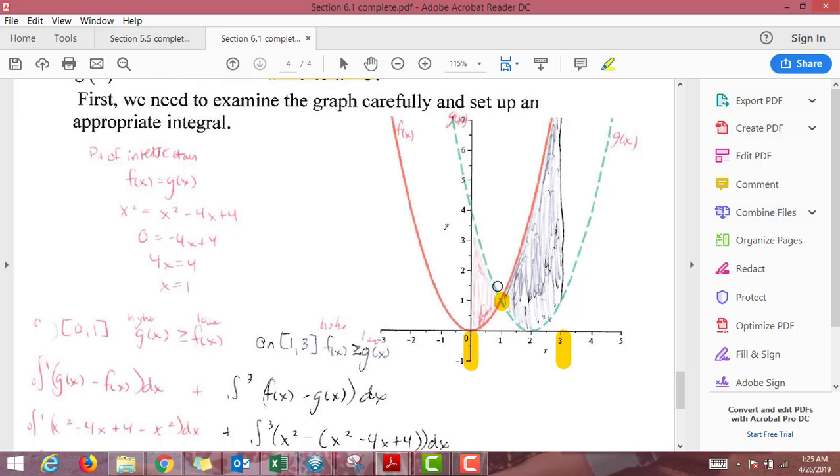And we need to think about what's happening. So on 0 to 1, the green dashed line is higher. Again, you could use a test value or you could just take a vertical slice and see that the green dashed line hits that vertical slice higher than the red one does.